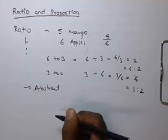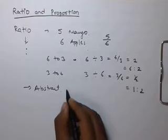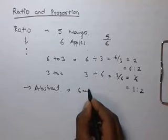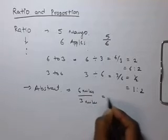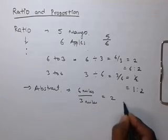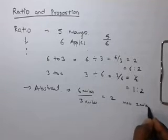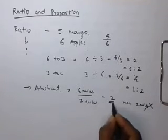Suppose for instance the ratio of 6 miles to 3 miles. 6 miles to 3 miles will be 2, not 2 miles. It will be 2.